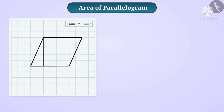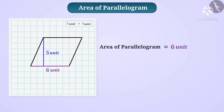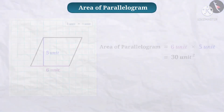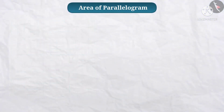Now, we will see some more examples. Here, base is 6 units and height is 5 units. So, what is the area of the parallelogram? Area of the parallelogram is base into height — 6 into 5 is equal to 30.